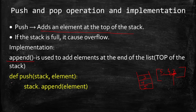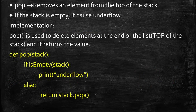To create the push function: use the keyword def, function name push, and pass two arguments — stack and element. Then write: stack.append(element). This is the complete user-defined push function.